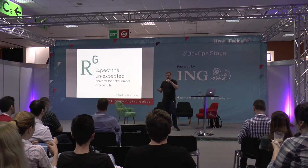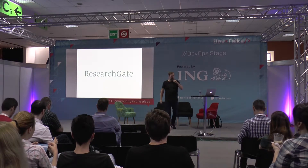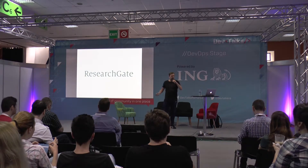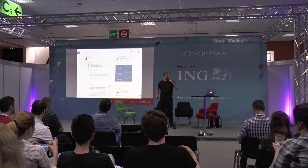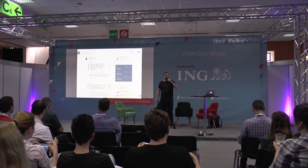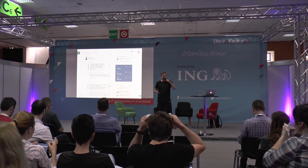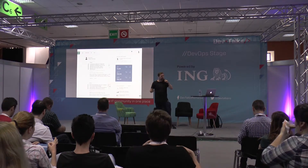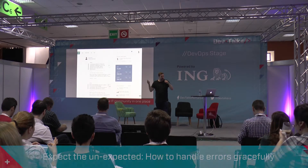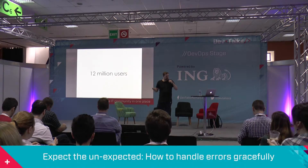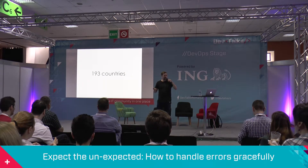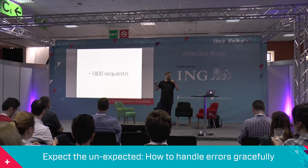A few words about me before that. I work at a company called ResearchGate in Berlin. It's a social network for scientists where people can share their scientific data with other scientists and collaborate on it. We have about 12 million users from 190 countries, which means 1,800 requests per second.